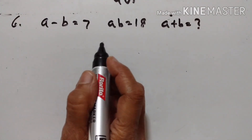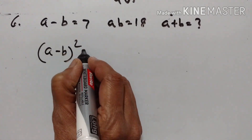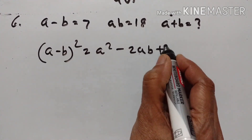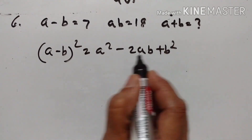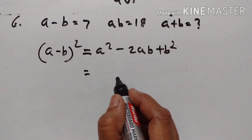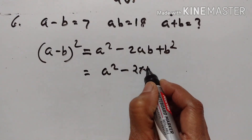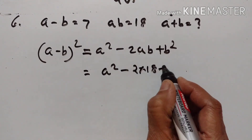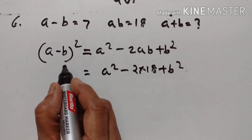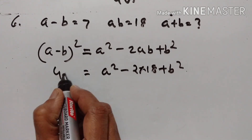Problem 6 is a similar problem. (A−B)² = A² − 2AB + B². A minus B is equal to 7, and AB = 18. So (A−B)² = 7² = 49.